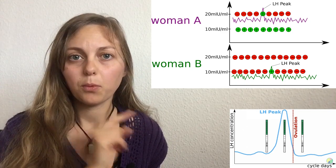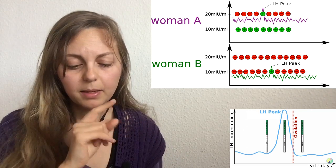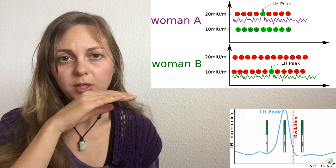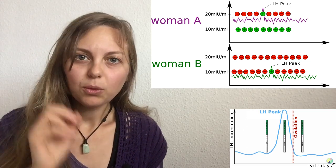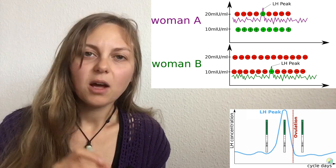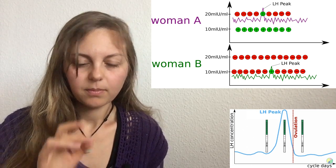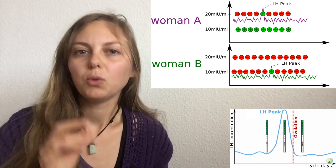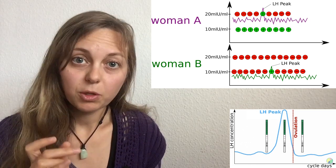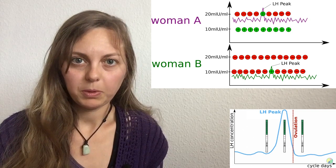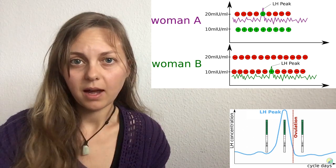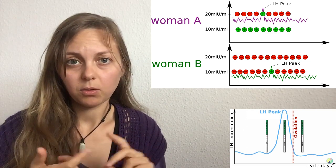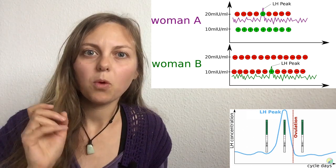Woman B represents the other side — she has a very low level of LH. If Woman B uses a 20 mIU test strip she gets only negative results. But if she uses a 10 mIU test, she finds out when her LH peak is. However, a big problem is that not all women fit neatly into these two types, so the standard threshold test does not work for every woman.